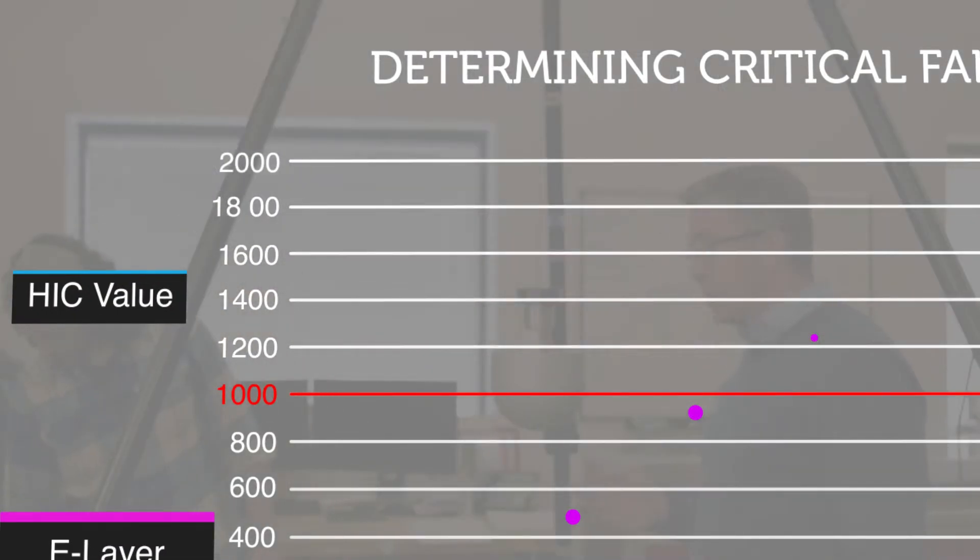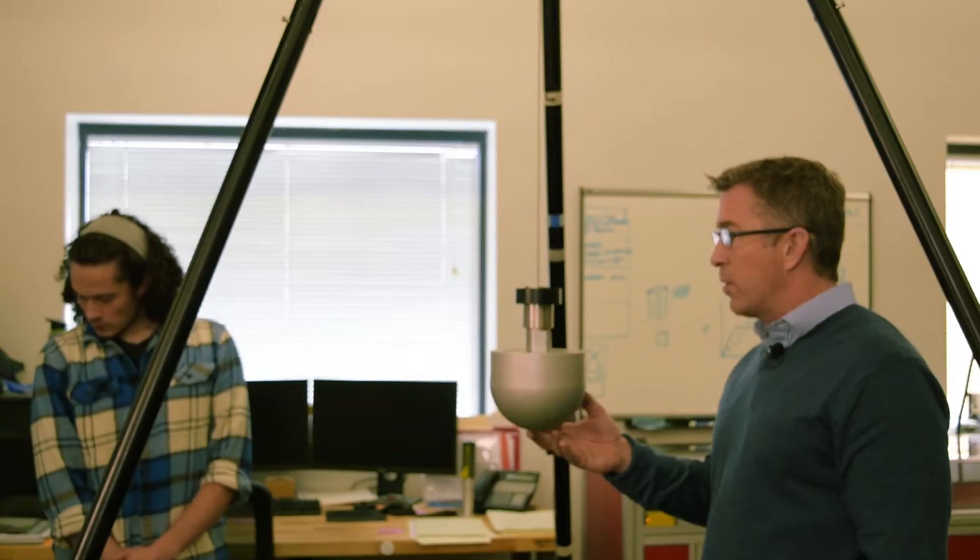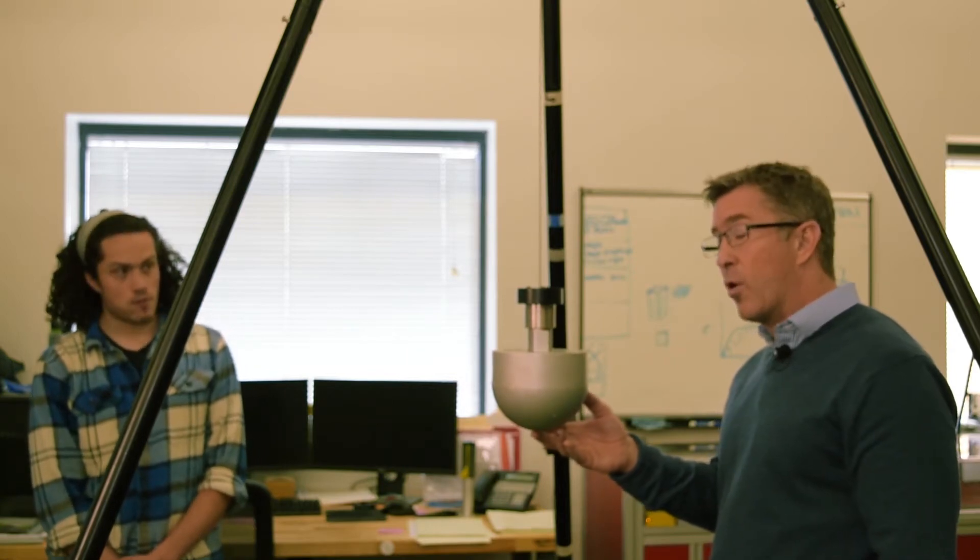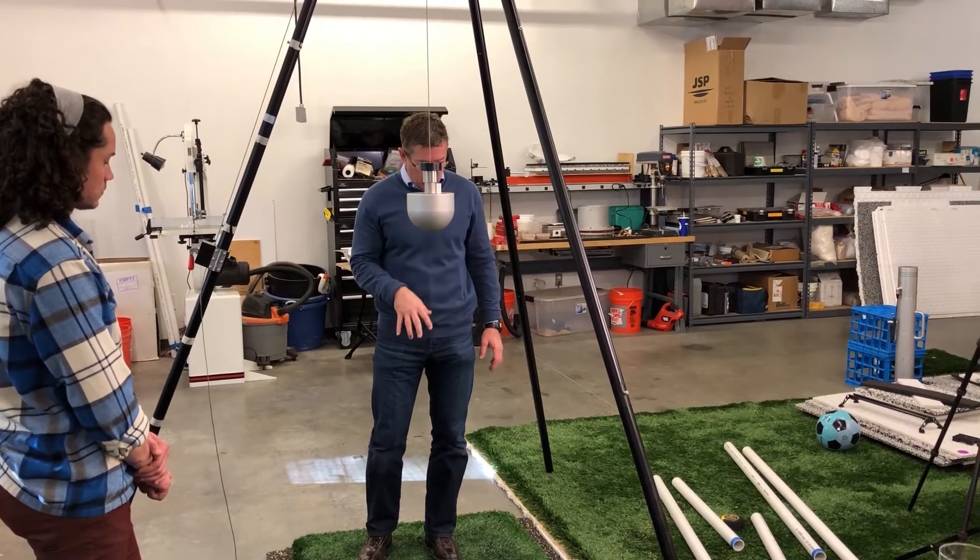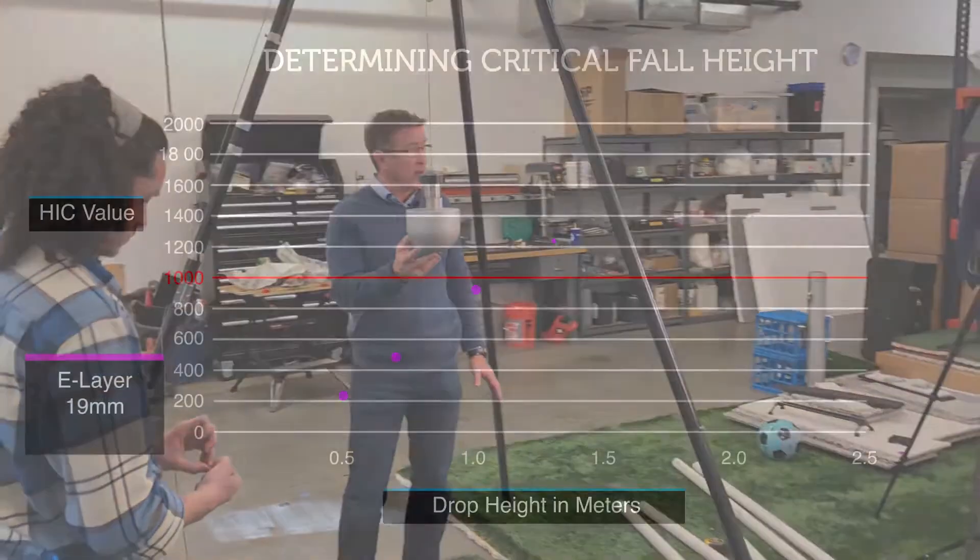So on the first drop, the HIC is 1,214, so over a thousand. Meaning that this system would not pass the OneTurf concept standard.